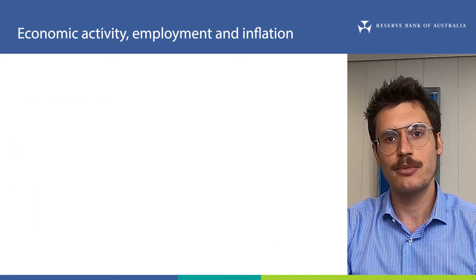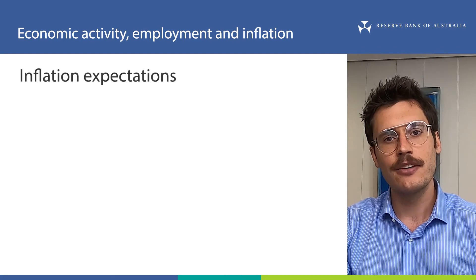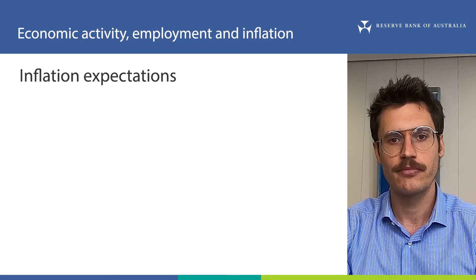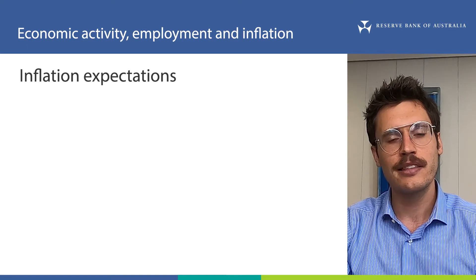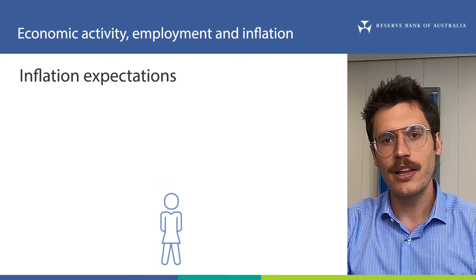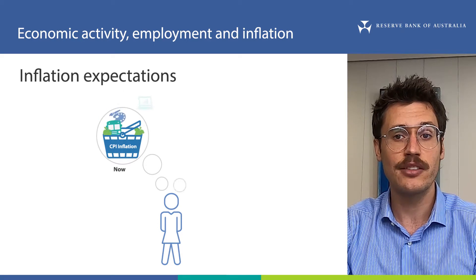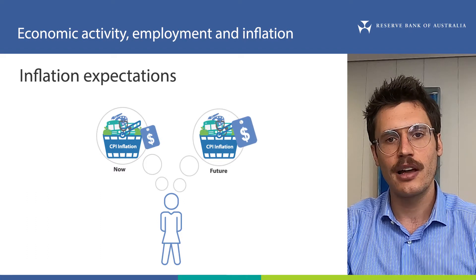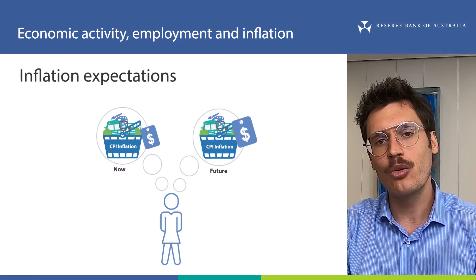There is a third chain of transmission from monetary policy to inflation – inflation expectations. Inflation expectations work a bit differently to cost push and demand pull inflation. Instead of affecting inflation through aggregate demand and employment, they transmit directly from monetary policy to inflation. Inflation expectations measure how much households and businesses expect prices to rise in the future. This can affect their behaviour when they make economic decisions, like when they buy goods and services, what type of investments they make, and how much income or revenue they want to earn.